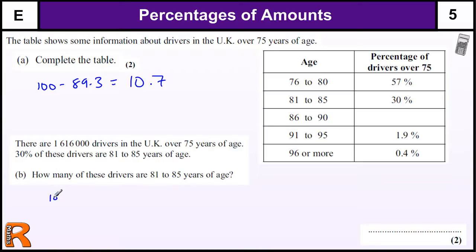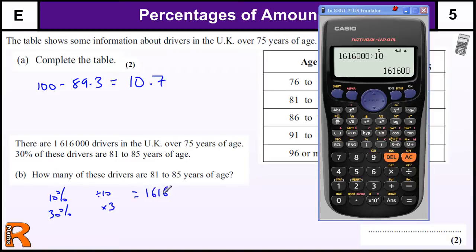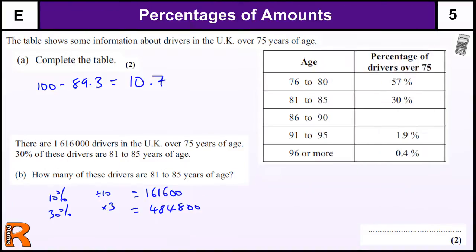What we would normally do without a calculator is find 10% by dividing by ten, then multiply by three to get 30%. So let's do that on the calculator: one million six hundred and sixteen thousand divided by ten gives us 161,600, then times that by three gives us 484,800. We should write that on the answer line — four hundred and eighty four thousand eight hundred — for two marks.